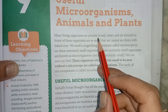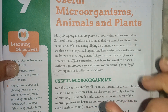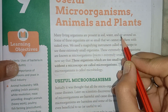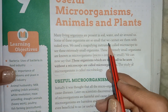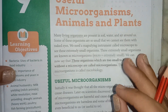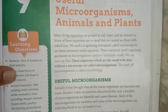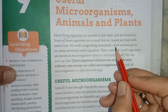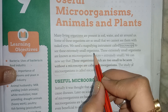Many living organisms are present in the soil, water and air around us. Some of these organisms are so small that we cannot see them with the naked eye. We need a magnifying instrument called a microscope to see these extremely small organisms.